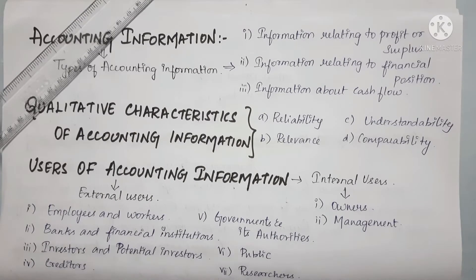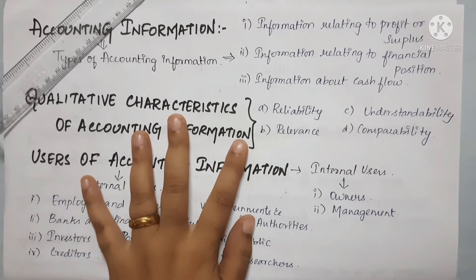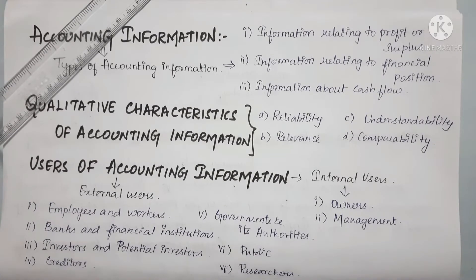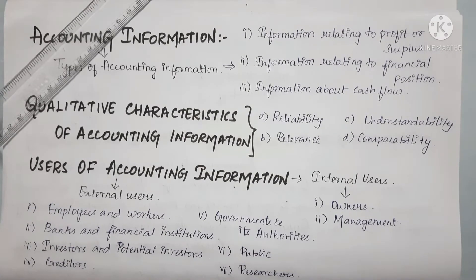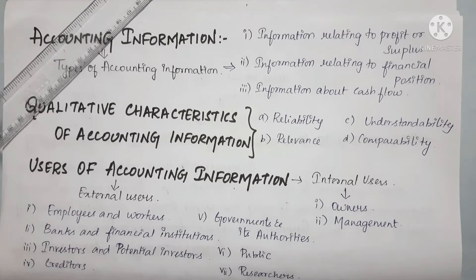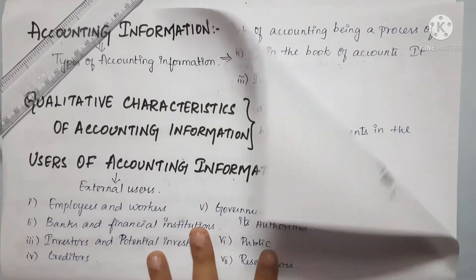This is how we improve the process through decision making and budgeting. Regarding profit or surplus, we will prepare statements — Trading, Profit and Loss, and Balance Sheet. In the case of a company, it will be a Statement of Profit and Loss Account.